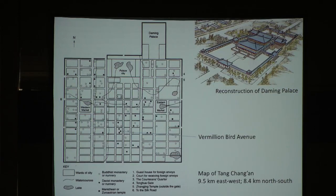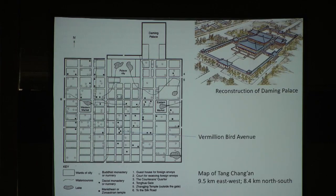Since Li was the surname of the Tang royal house—the same name as the founder of Daoism, Li Er—Tang emperors tended to favor Daoism. In the course of time, many monasteries and nunneries of the two religions multiplied within the city. On the map, the solid dots and round circles indicate Buddhist and Daoist establishments, showing how many of them there were.